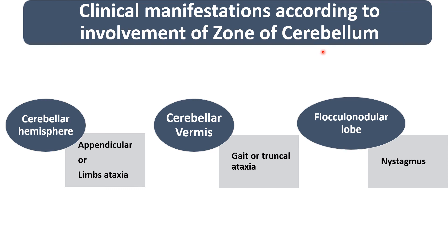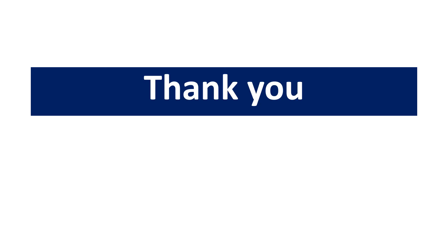According to the structure of the cerebellum involved, different clinical manifestations occur. Cerebellar hemisphere involvement leads to limb ataxia or appendicular ataxia. Cerebellar vermis involvement leads to truncal ataxia or gait ataxia. Flocculonodular lobe involvement leads to eye signs and nystagmus. This concludes the Cerebellar Function Assessment. Thank you so much.